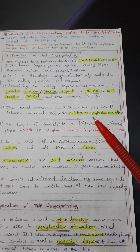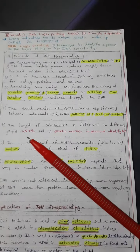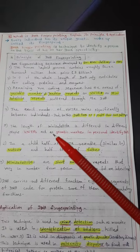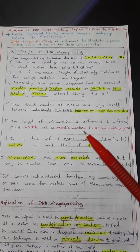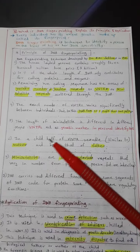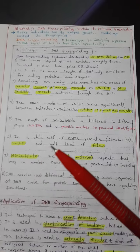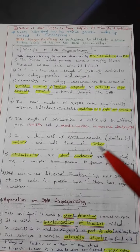DNA from no two people show the same pattern. VNTRs are genetic markers in personal identity tests. In a child, half of VNTRs resemble the mother and half that of the father.